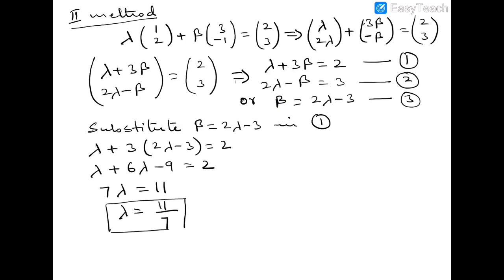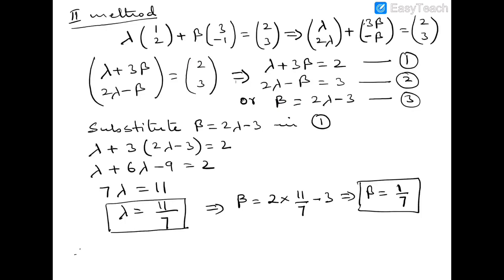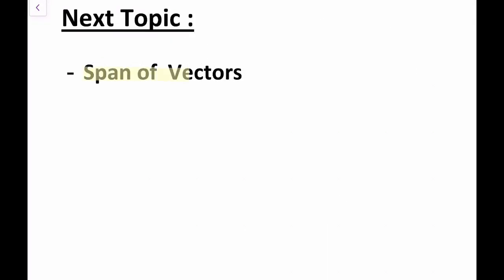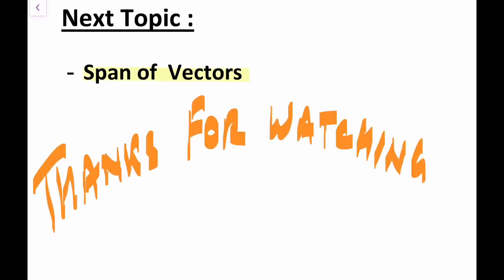Therefore β = 2(11/7) − 3 = 1/7. So if we multiply vector v1 by 11/7 and vector v2 by 1/7 and add them, we get vector b. We can say that vector b is in the span of v1 and v2. Span will be our next topic, which we will cover in the next video. Thanks for watching!